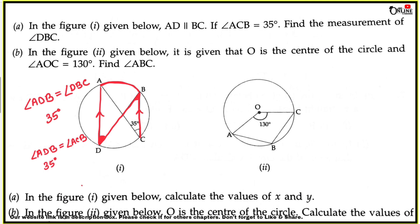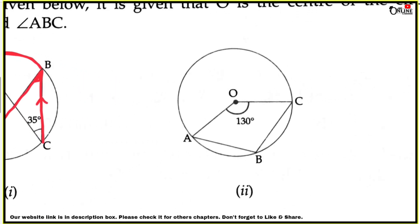Problem 3b: In figure 2, O is the center of the circle. Angle AOC equals 130 degrees. We need to find angle ABC. The exterior angle AOC equals 360 minus 130, which is 230 degrees, because the angle at the center is a complete angle of 360 degrees.